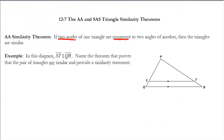Let's take a look at the first example. It says that in this diagram, segment ST is parallel to segment QR. We need to name the theorem that proves the pair of triangles are similar and provide a similarity statement. There are two things to do: name the theorem and write the similarity statement.